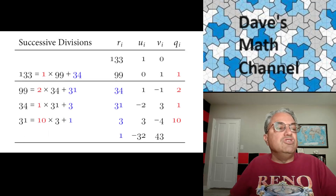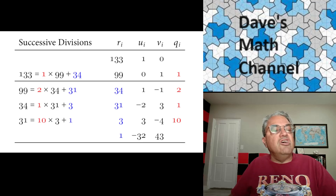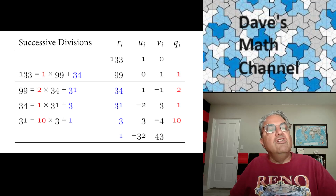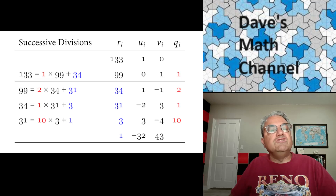Here's a pretty simple example. Suppose we want to compute the extended GCD of 133 and 99. So A is 133, B is 99. Look at the table on the right. We start with R0 equal to 133, U0 equal to 1, V0 equal to 0. Then R1, that's our B, is 99, U1 is 0, and V1 is 1. We always initialize the sequences of U's and V's this way: U0 equals 1, U1 equals 0, V0 equals 0, V1 equals 1.